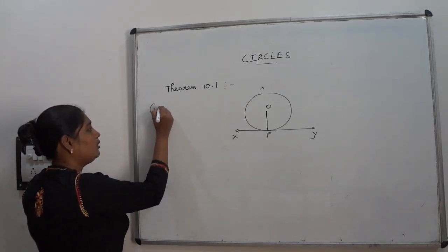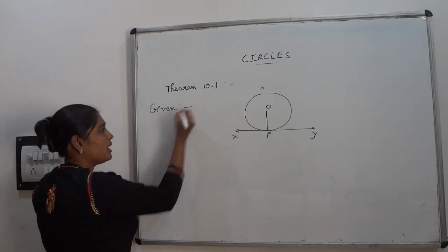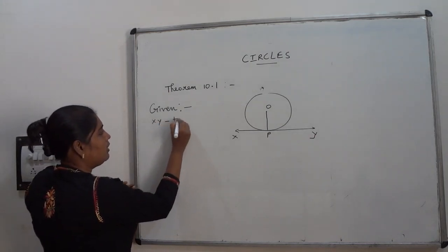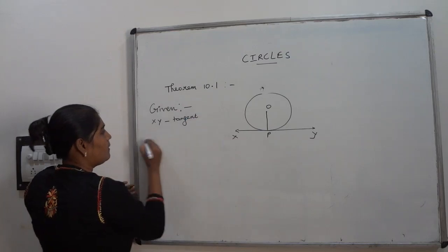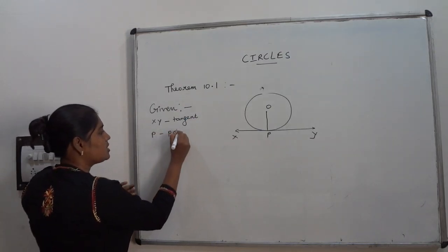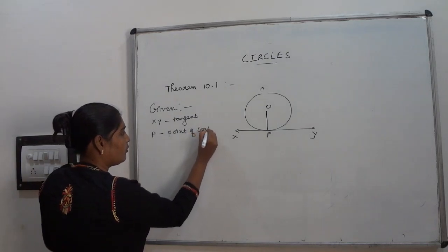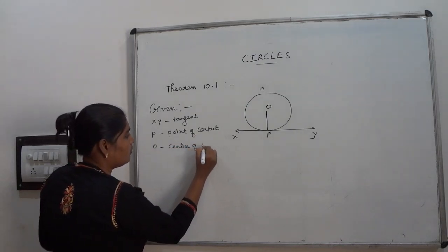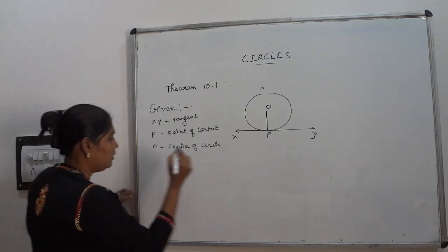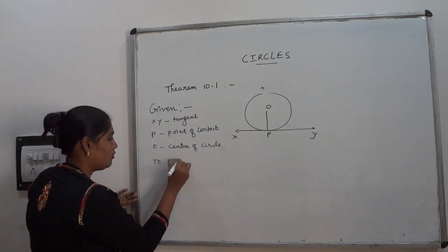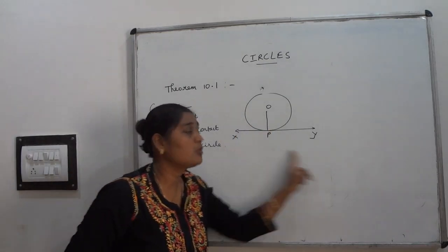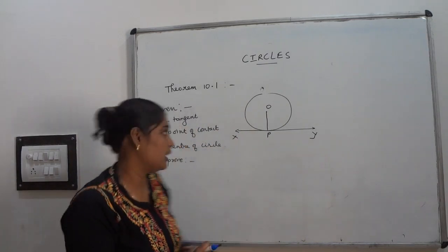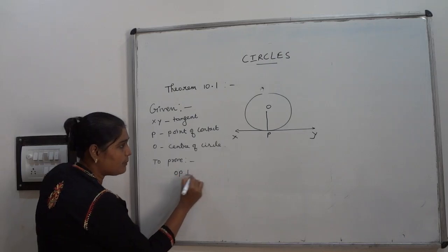Before writing the proof, you have to write the given, to prove, and proof parts. Given: XY is the tangent, P is the point of contact, and O is the center of the circle. To prove: the radius is perpendicular to the tangent through the point of contact — that is, OP is perpendicular to XY.